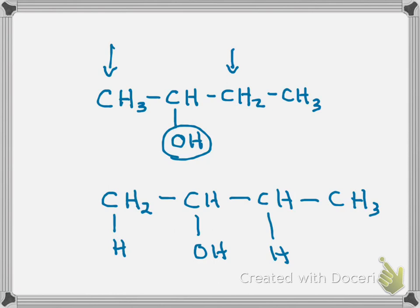It turns out the hydrogen always comes off the carbon that has the fewest hydrogens. This is known as Markovnikov's rule. The book spells it a little differently since it comes from Russian and gets translated differently — I gave you both spellings. Markovnikov said the carbon with the fewest hydrogens is where the hydrogen comes off.